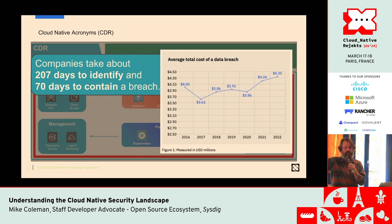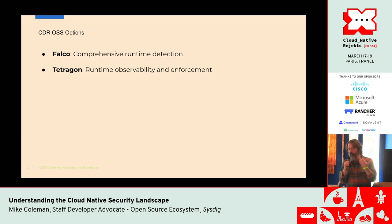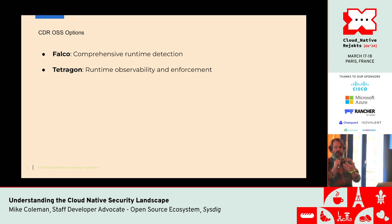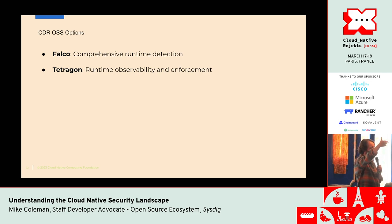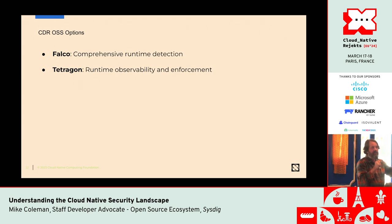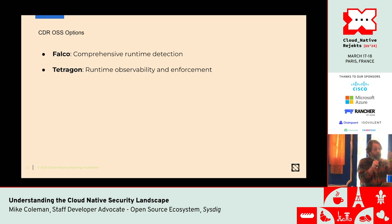When an attacker has access to your system, research from Sysdig says it takes them about 10 minutes to start doing things you're not going to be happy about. That's where tools like Falco and Tetragon come in. These are runtime security tools that can look for things like: are you running bad versions of binaries? Falco has a plugin architecture that lets you build rules on any stream of events. I did a talk called 'Nearly Universal Threat Detection with Falco' — if you have a stream of events, you can build rules on that.